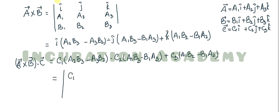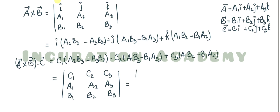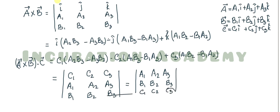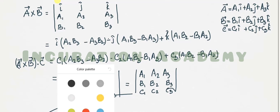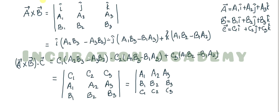We can write this in determinant form with rows c1, c2, c3; a1, a2, a3; b1, b2, b3. From mathematics, interchanging the rows of a determinant does not change the absolute value of the result, so we rewrite with a vector first (a1, a2, a3), then b vector (b1, b2, b3), then c vector (c1, c2, c3). This determinant gives the volume of the parallelepiped.